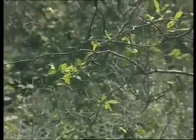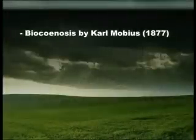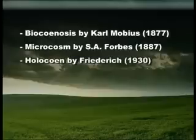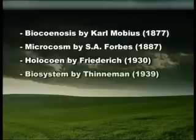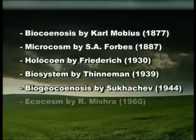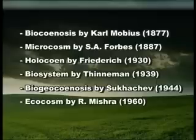The ecosystem has been assigned various names by different workers: biocoenosis by Karl Möbius in 1877, microcosm by S.A. Forbes in 1887, holocoen by Frederick in 1930, biosystem by Thienemann in 1939, biogeocoenosis by Sukachev in 1944, and ecocosm by R. Mishra in 1960. The importance of ecosystem lies in the flow of energy and the cycling of matter between the living and non-living components.